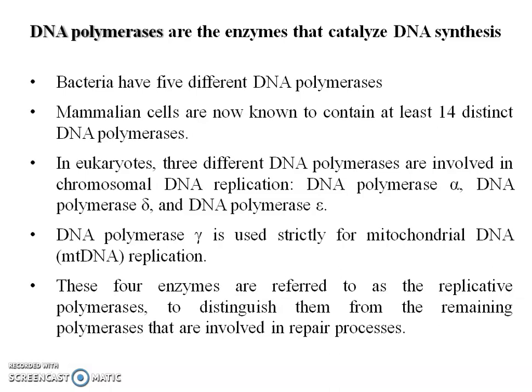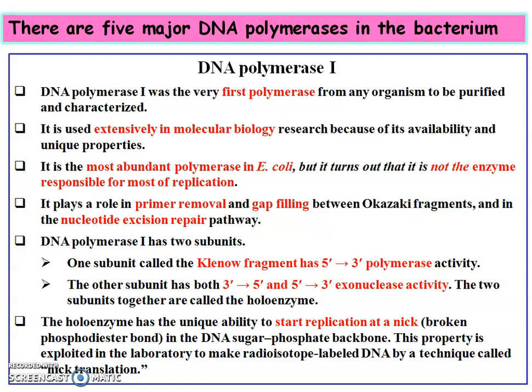In bacteria there are at least five different polymerases — DNA polymerase 1, 2, 3, 4, and 5 — whereas in eukaryotes the system is more complicated. DNA polymerase 1 was the first polymerase characterized; it is the most abundant polymerase in E. coli but is not the replicating enzyme. It plays an important role in primer removal, gap filling between Okazaki fragments, and DNA excision repair.